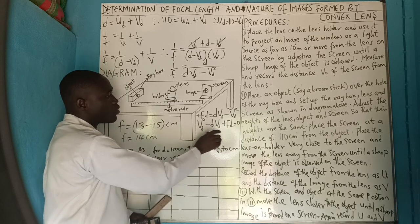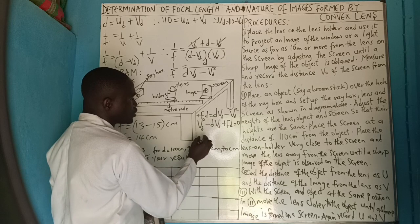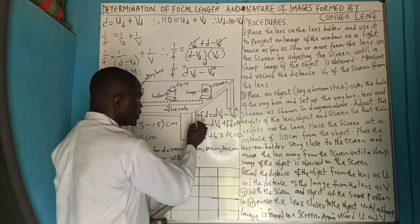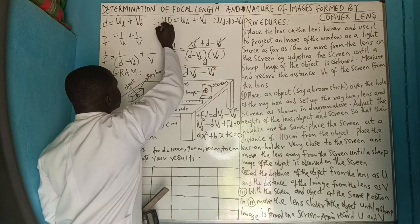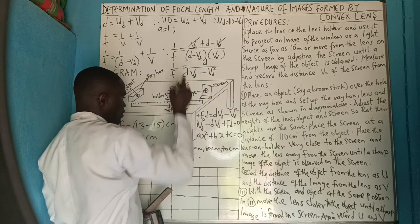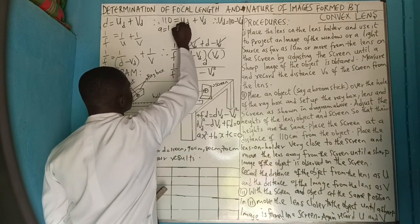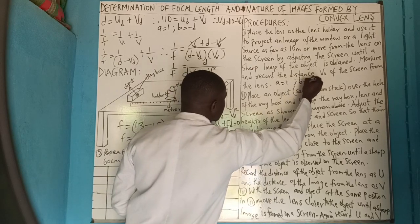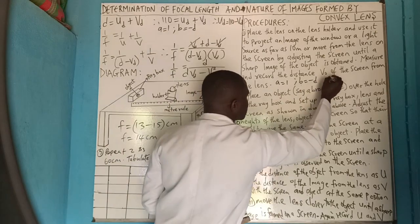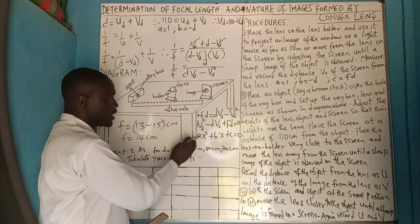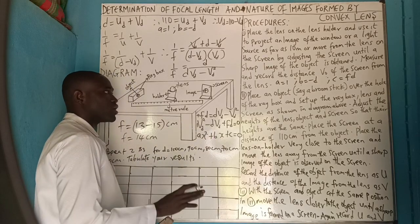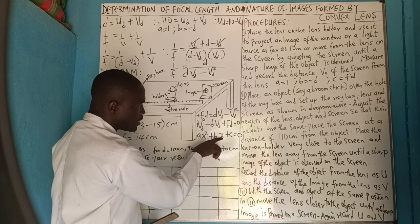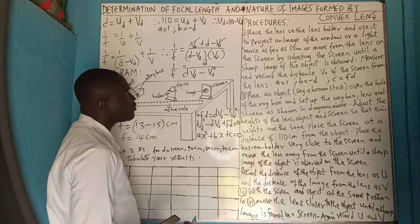Solving V_D squared minus D·V_D plus F·D equals 0 using the quadratic formula, comparing with A·X squared plus B·X plus C equals 0: A equals 1, B equals minus D, and C equals F·D. We are making V_D the subject of the formula, since V_D plays the role of X.